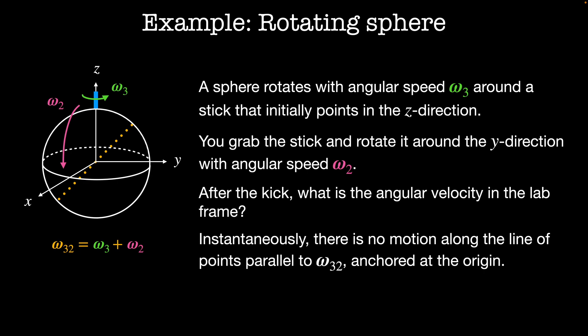This is an example of why coordinate systems fixed to the object might be more convenient. We know that the sphere is always rotating in some special direction, the direction that the stick is pointing in. Then the external rotation is always about some fixed direction in the lab frame, so that's the y direction, that's orthogonal to omega 3.